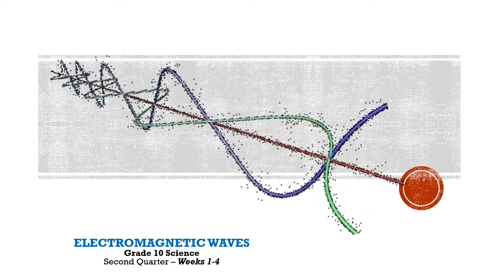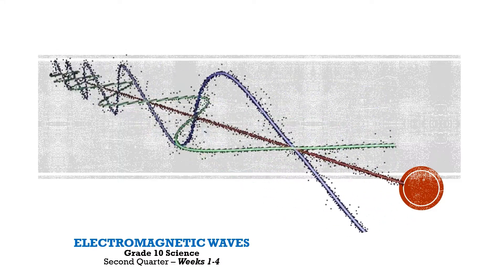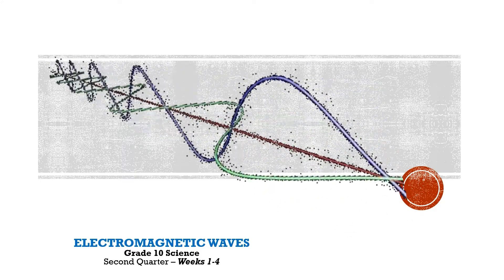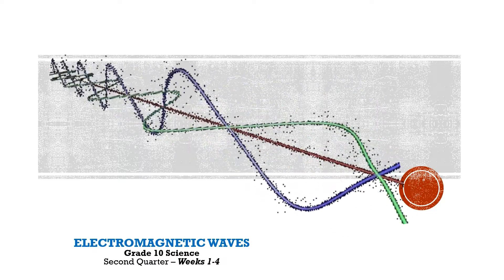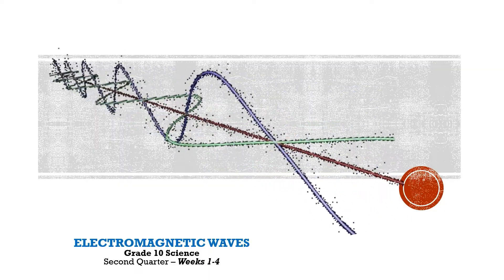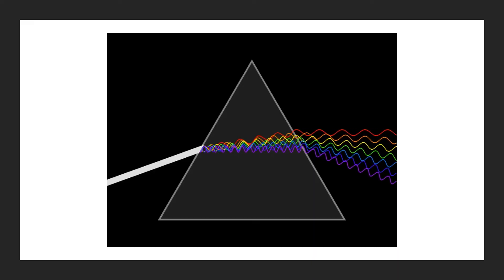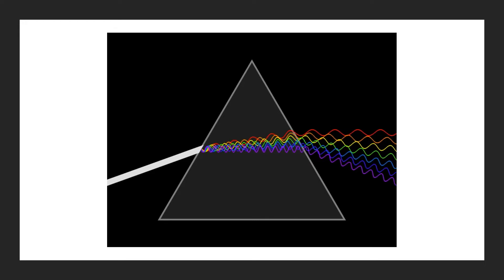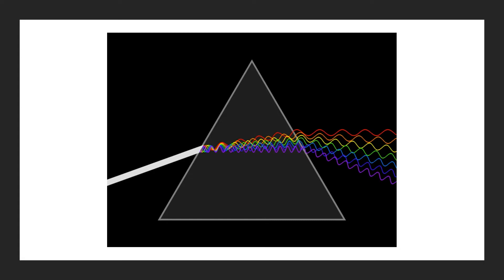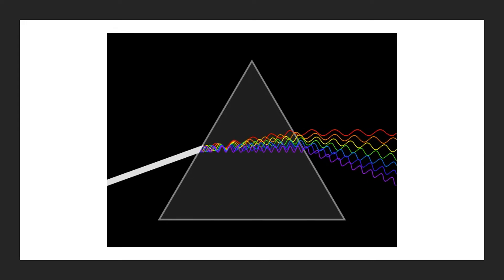In the first four weeks of our second quarter, you gain understanding of the different electromagnetic waves and their benefits. One of the most common among these electromagnetic waves is visible light. In the second part of our second quarter, we will study two of the properties of visible light — reflection and refraction — through different observable examples and experimentations using mirrors and lenses.